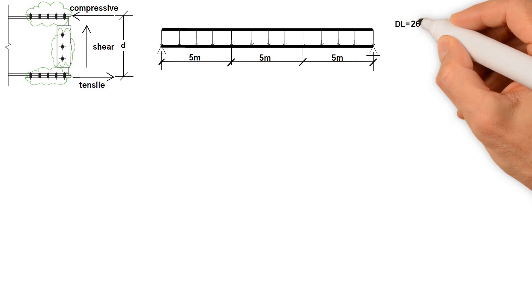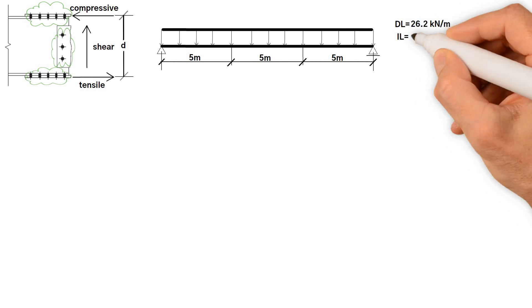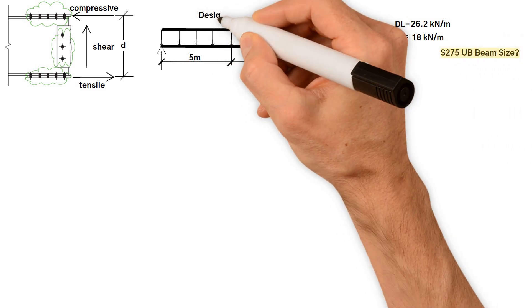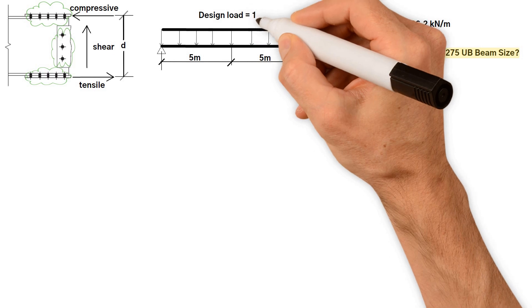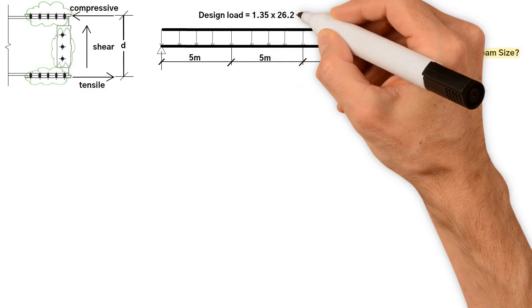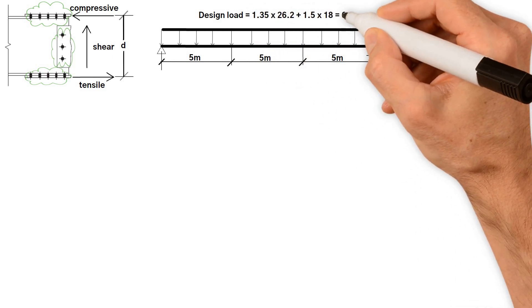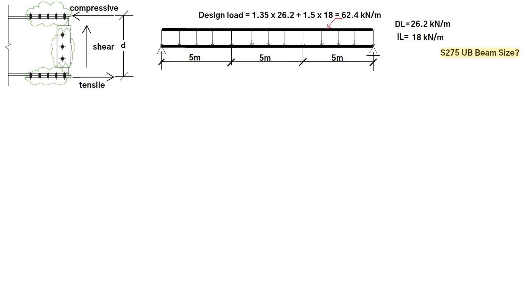It is subject to the following loads. Dead load equals 26.2 kN per meter. Imposed load equals 18 kN per meter. We need to determine the size of a suitable standard universal beam in S275 steel. So the design load equals 1.35 times 26.2 plus 1.5 times 18 which equals 62.4 kN per meter.